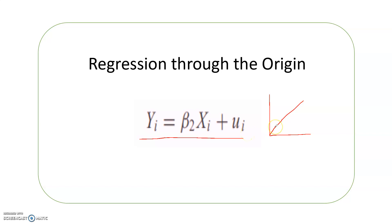This is called regression through the origin or a zero intercept regression model. Beta 2 here denotes the slope of the regression. Beta 1 would have shown the intercept term, which is absent here, and beta 2 is denoting the slope of the regression function.